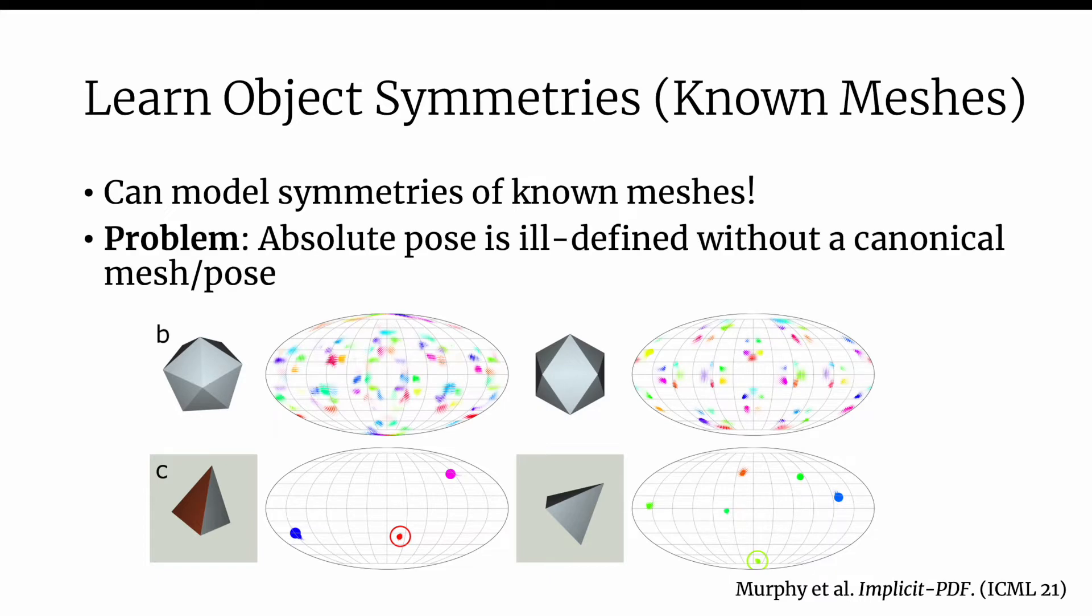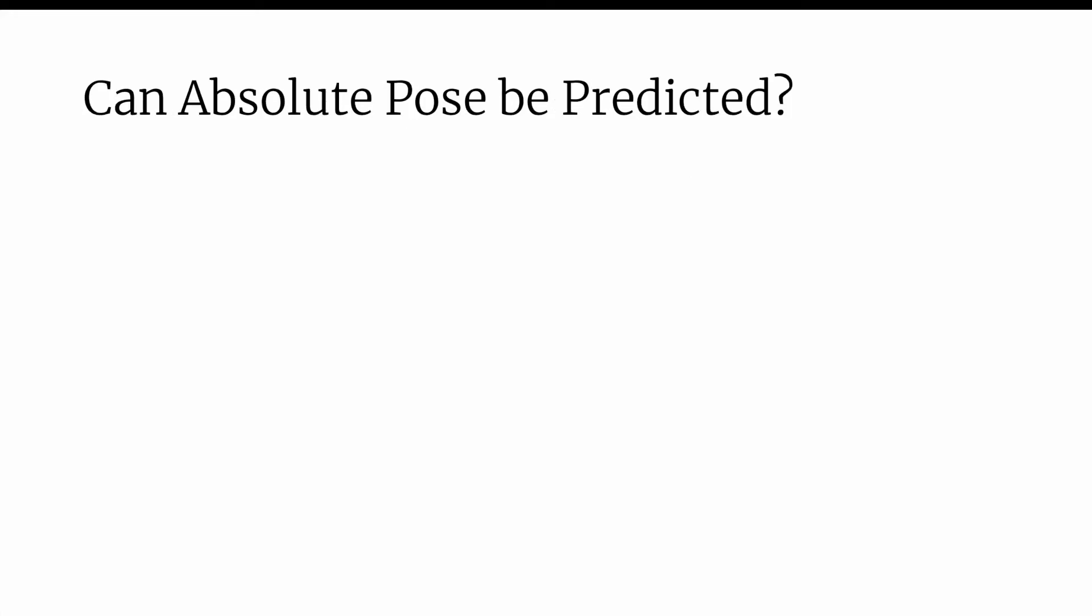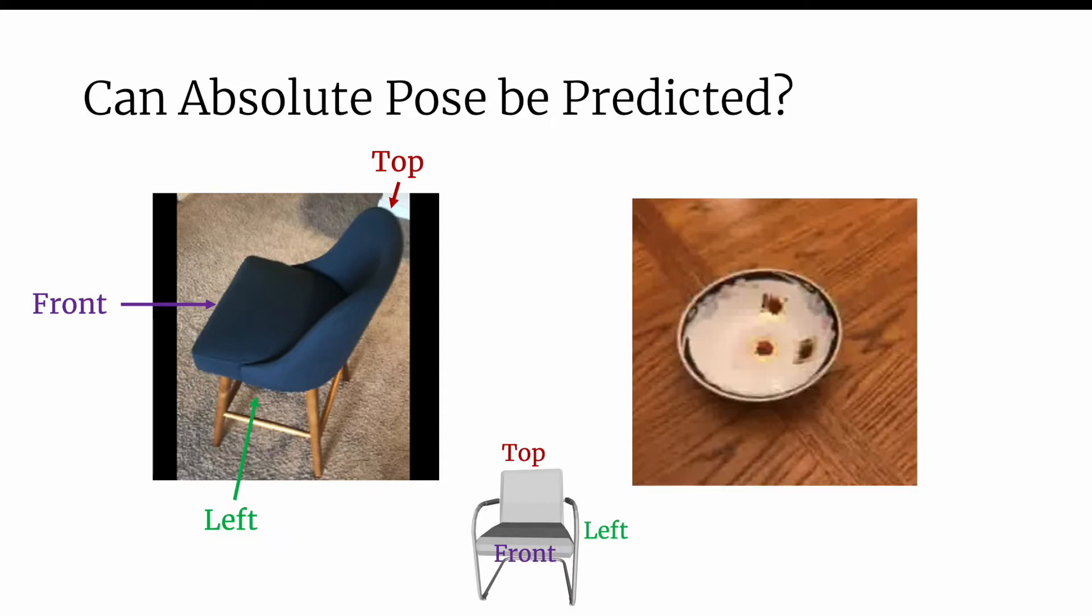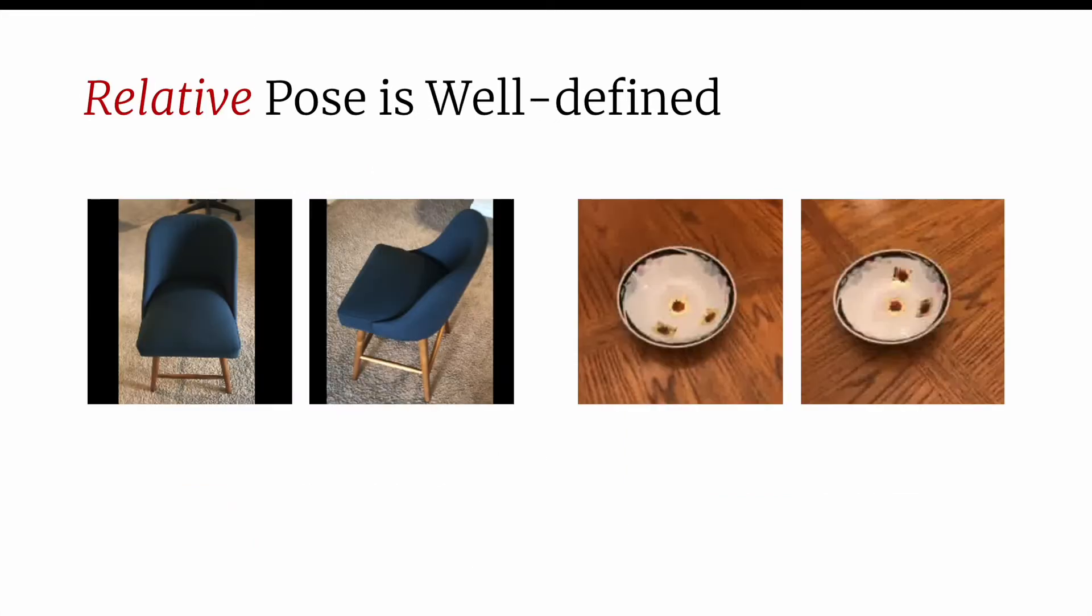However, this absolute pose is, in general, ill-defined without a canonical mesh or pose. Consider this image of a chair. Looking at it, we might be able to reason that the camera is looking at it from the top left side. To do this, we rely on a mental model of how a canonical chair is oriented. But what about a bowl? What is the front or left side of a bowl? While the absolute pose is ill-defined, the relative camera pose given two images of the same instance is always well-defined.